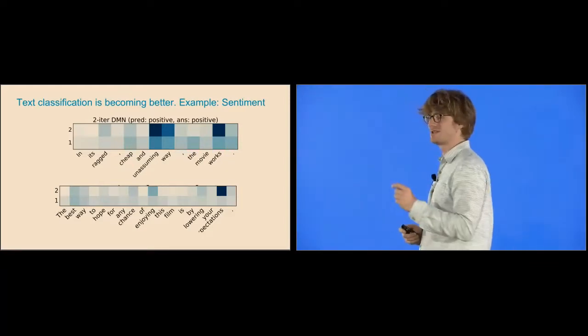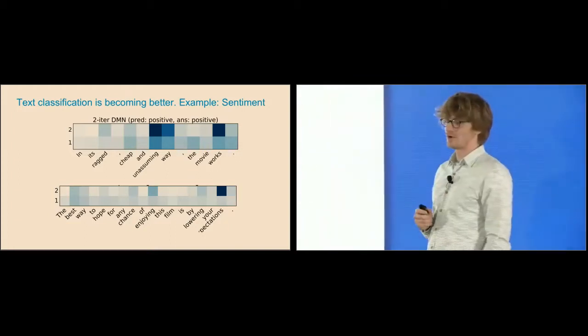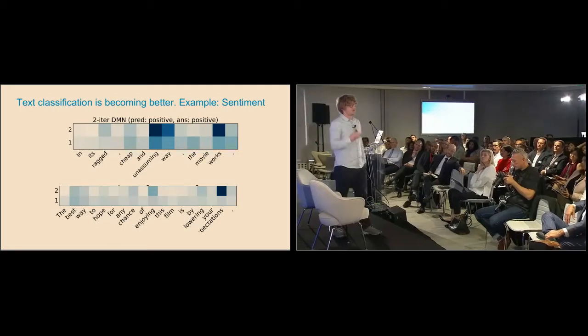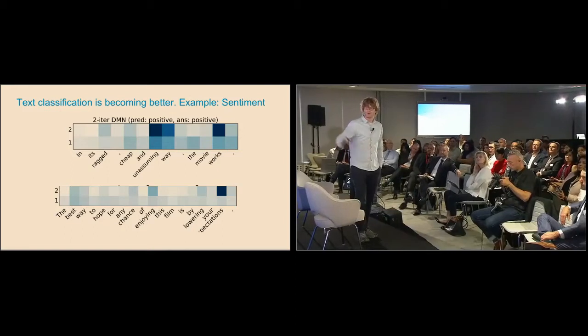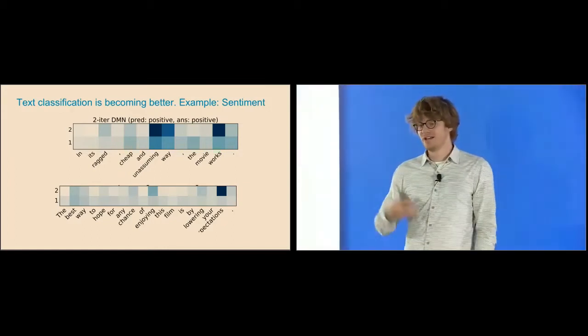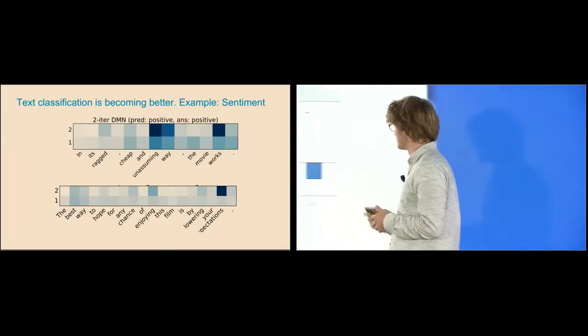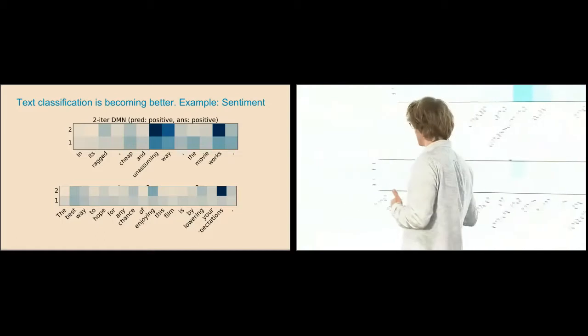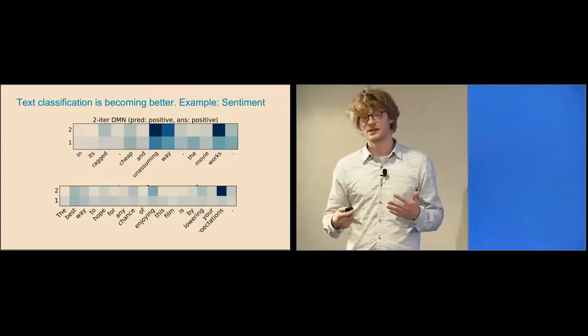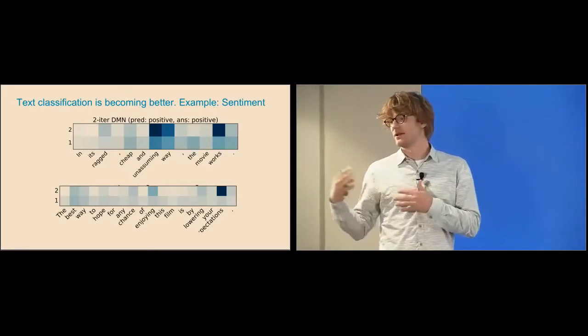It's clear that there are algorithmic trading companies that just struggled with what we call entity resolution or entity disambiguation. In general, ambiguity is a big problem in natural language understanding. There are a lot of different ways you can phrase the same idea, have the same meaning, but describe it in many different ways. A simple and fun example of that in natural language processing is sentiment analysis. Here are a couple of the hard examples that really good sentiment analysis algorithms now can accurately classify. The first one is, in its ragged, cheap, and unassuming way, the movie works. Or the best way to hope for any chance of enjoying this film is by lowering your expectations.